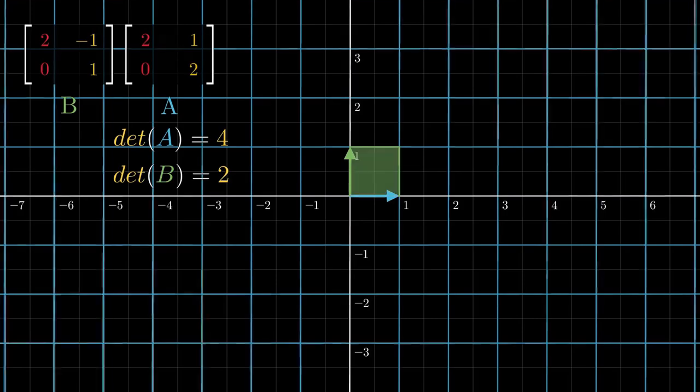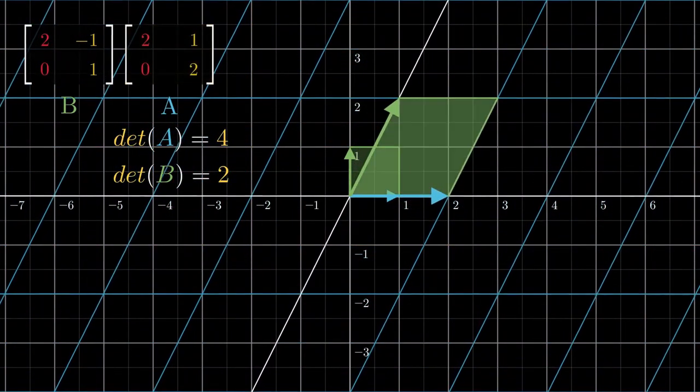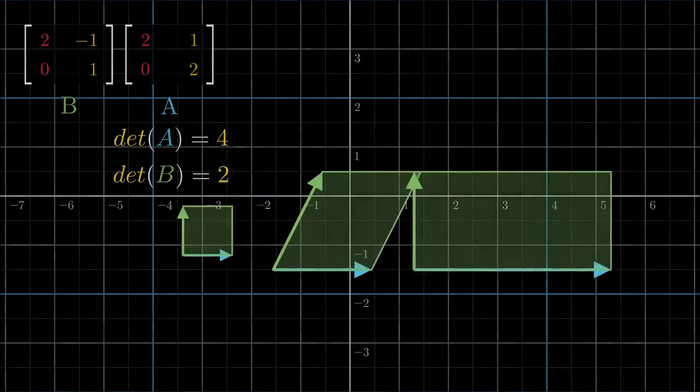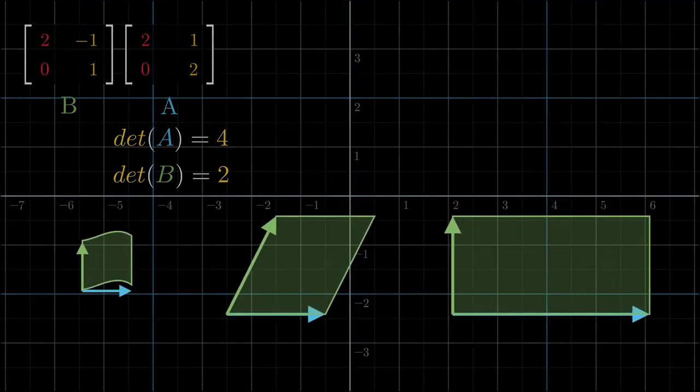I want you to focus on the fate of that unit area spanned by the basis vectors during the transformations A, then B. That unit area during transformation A ends up getting scaled by a factor of 4, and that new area...